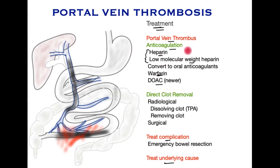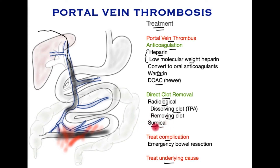Rarely, patients may not be able or suitable for anticoagulation, and there is some evidence that direct clot removal may be beneficial in specific patients. This can be done by attempts at dissolving the clot with X-ray guidance, where catheters are inserted directly into the portal vein and clot-busting products are given or clots are removed under imaging guidance, re-establishing the flow of the portal vein. Far less commonly, surgery may be deployed to directly remove the clot. This condition is associated with compromise of the bowel, which may lose its blood supply and infarct, leading to perforation. The treating team must be very vigilant and must perform emergency surgery to remove the dead bowel if a life is to be saved.